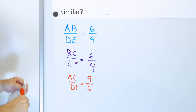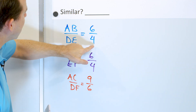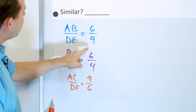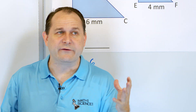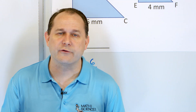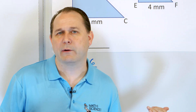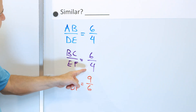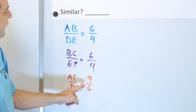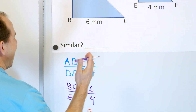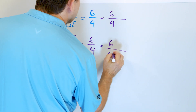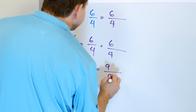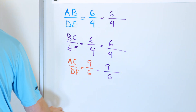We've formed three different ratios — 6/4, 6/4, and 9/6. If these triangles are similar, meaning one is just a shrunk-down version of the other, then all three ratios must be the same. At first glance, this last one looks different. However, let's simplify all the fractions: 6/4, 6/4, and 9/6.